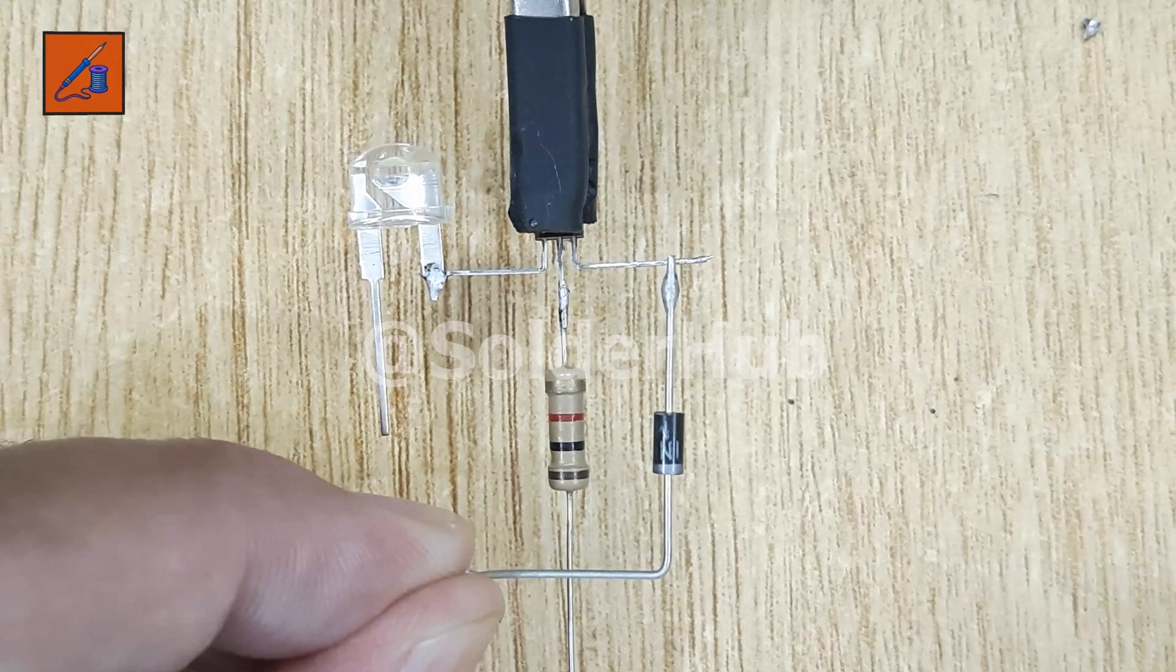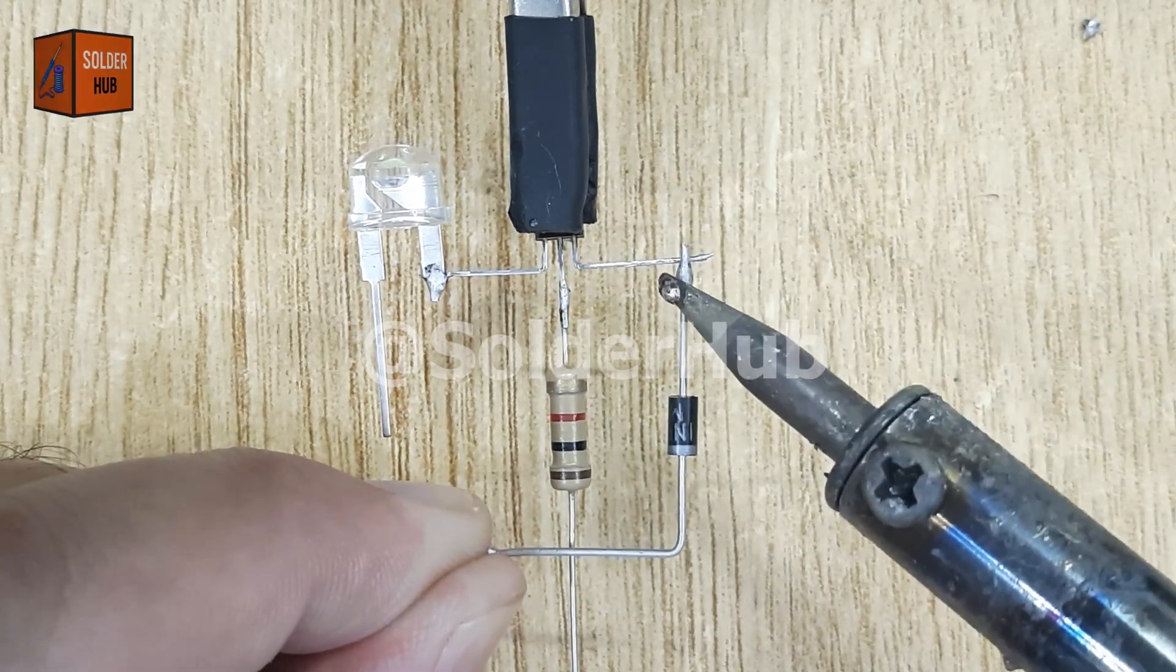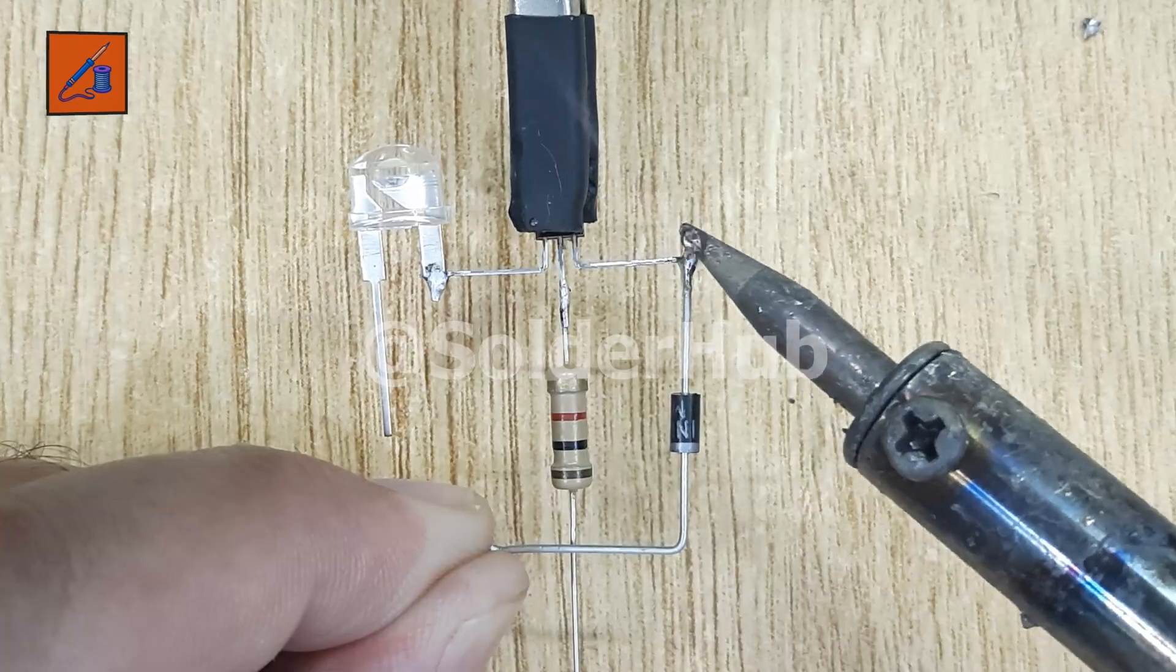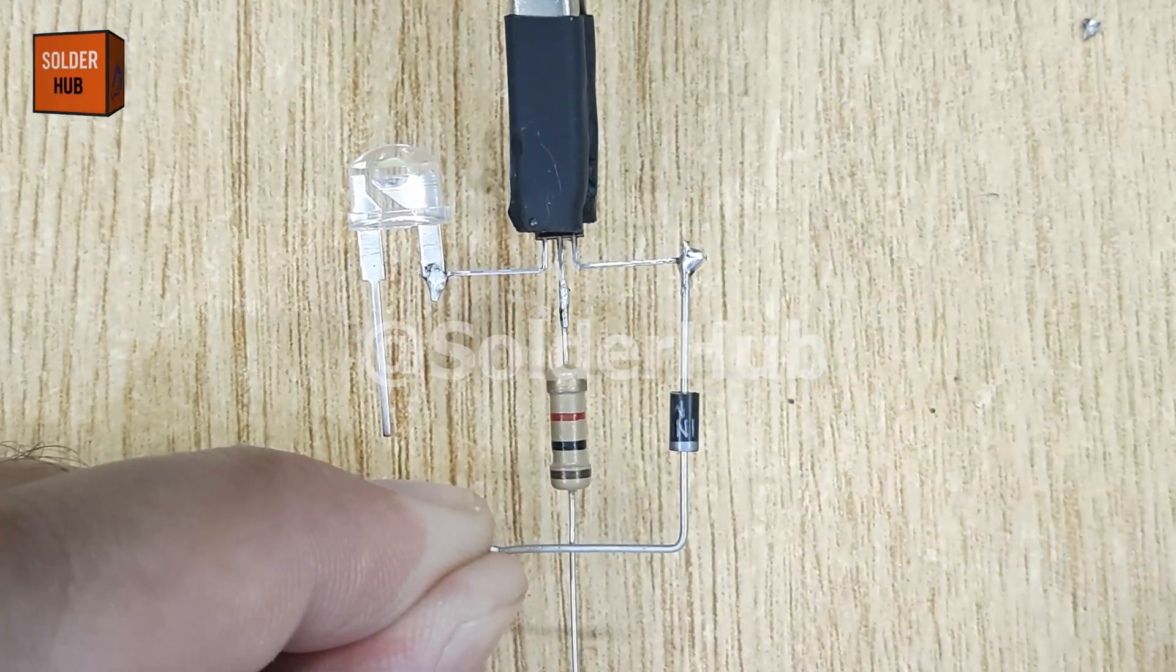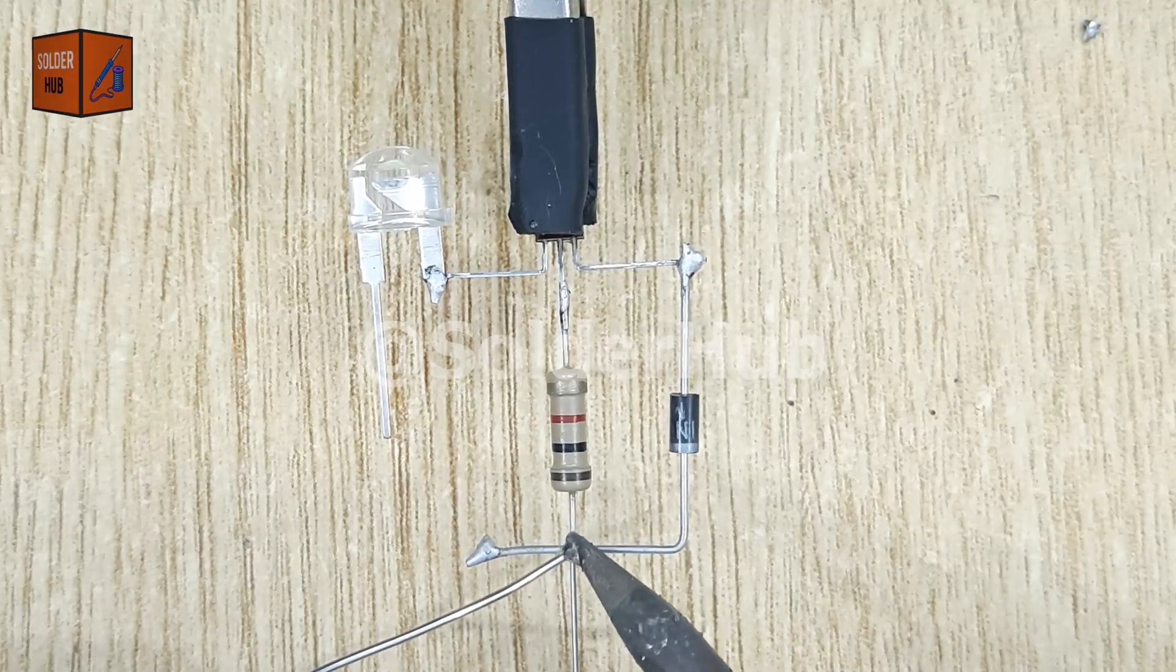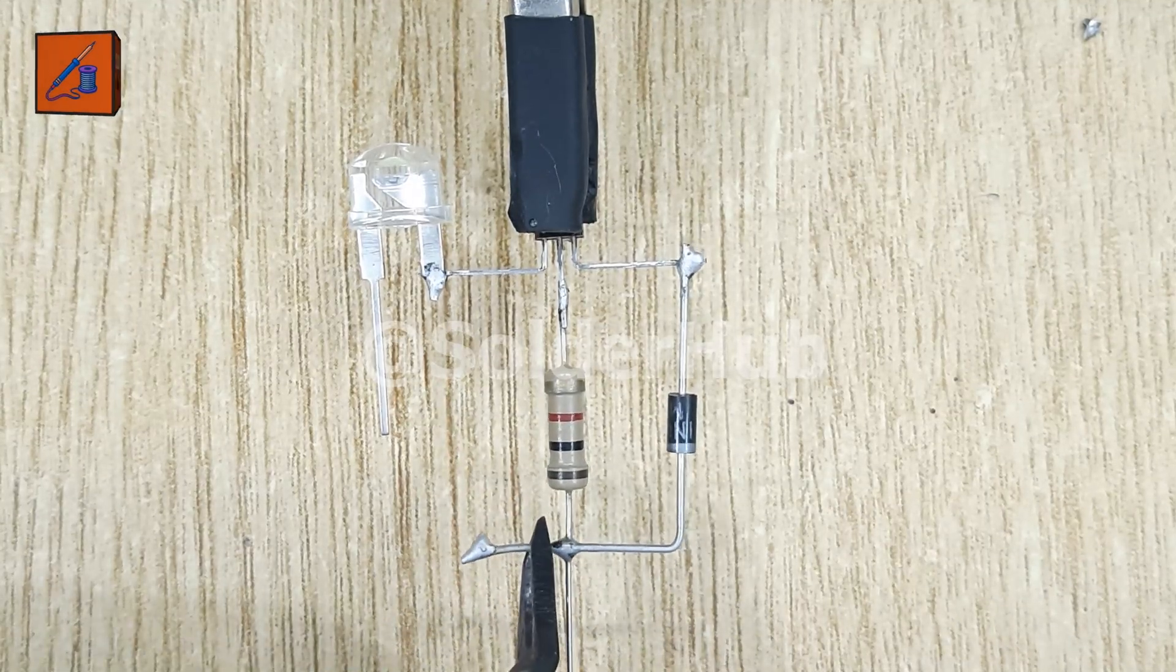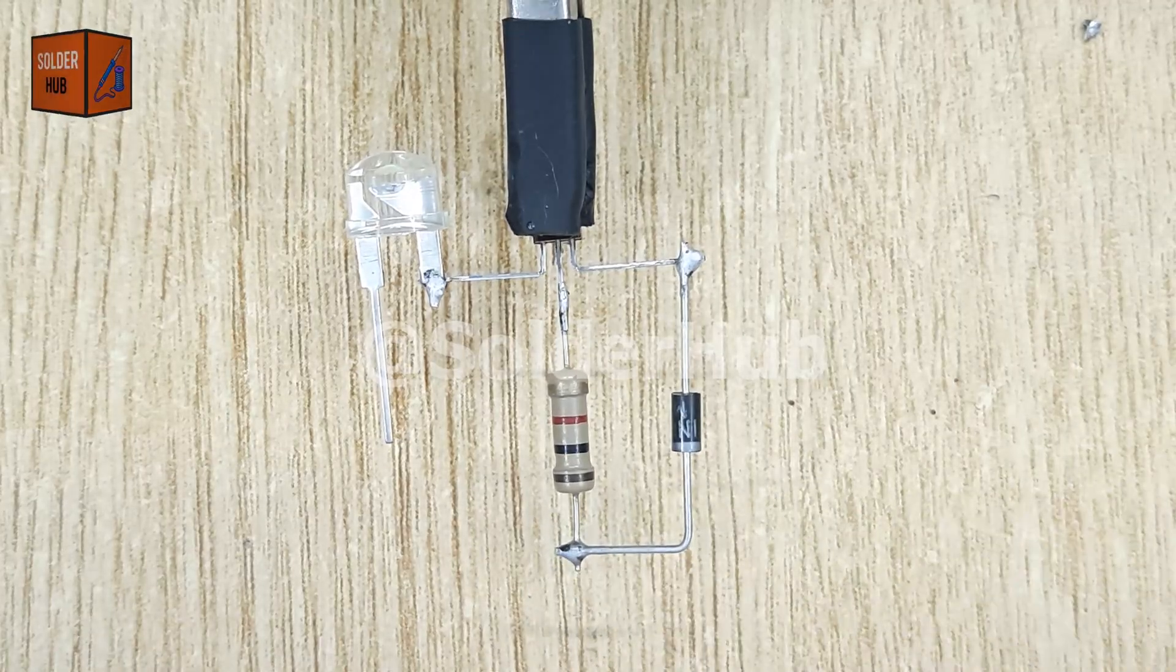Moving ahead, I'll use a 1N4007 diode, which will serve as a blocking diode. This prevents the battery from discharging back into the solar panel when there's no sunlight. I'll solder the positive pin of the diode to the emitter pin of the transistor, and the negative pin of the diode to the resistor we just connected to the base. Again, I'll trim away the extra pins to keep everything neat.